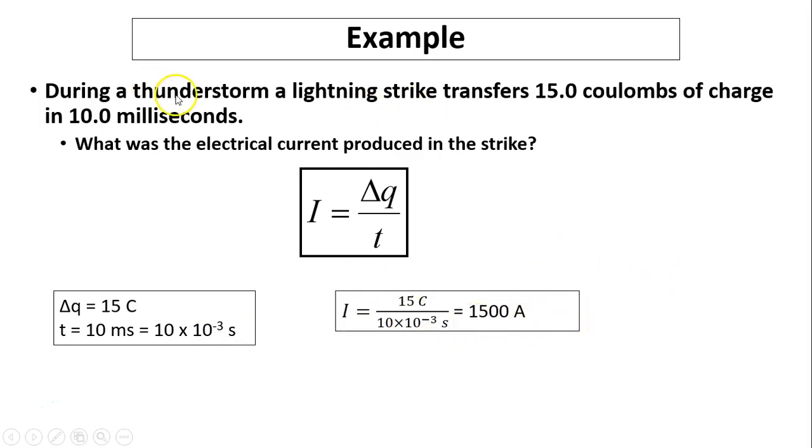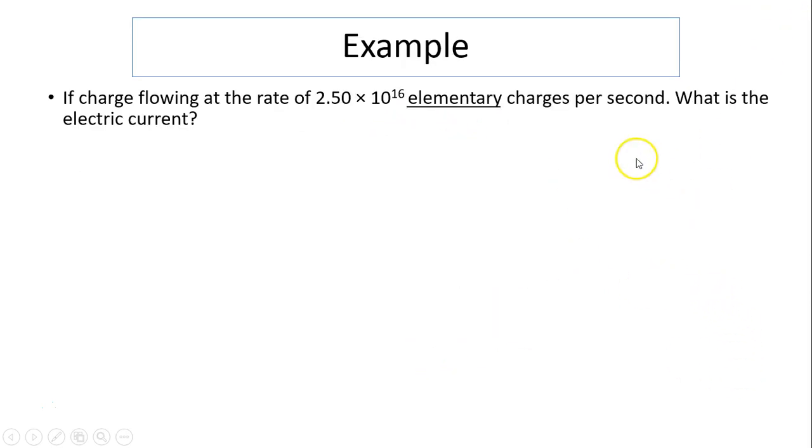Another example: If the charge is flowing at a rate of 2.5 times 10 to the 16 elementary charges per second—remember, we have to change elementary charge to coulombs—what is the electric current?